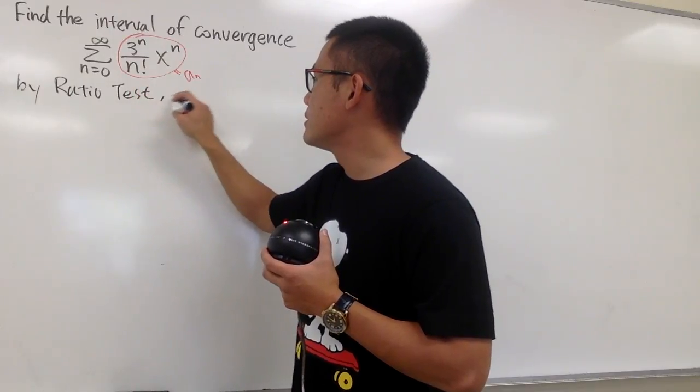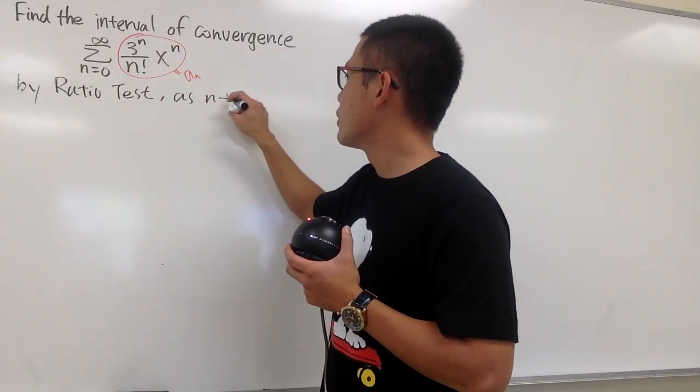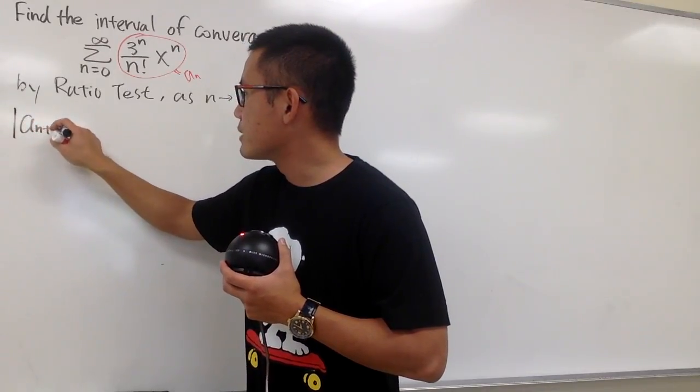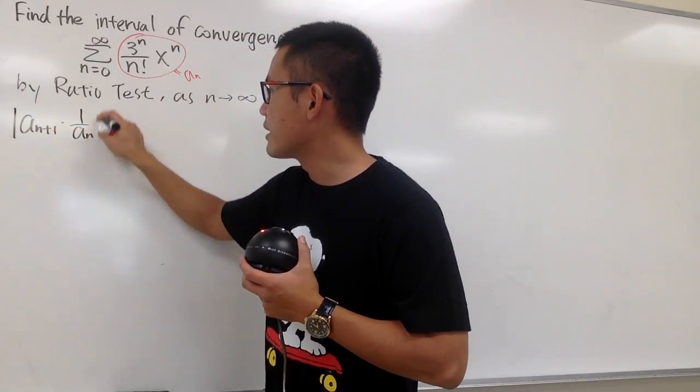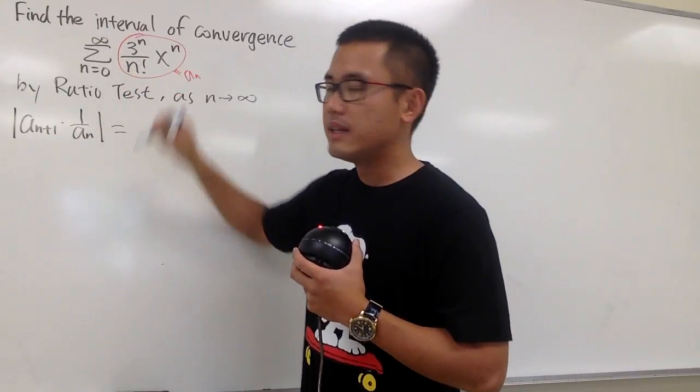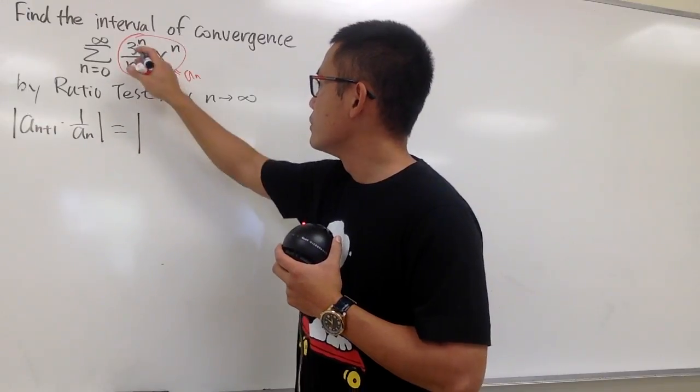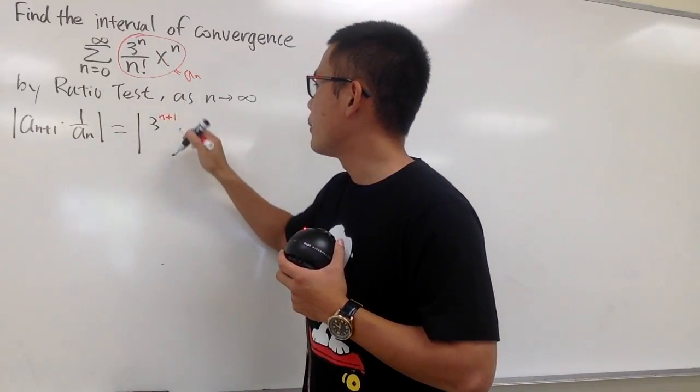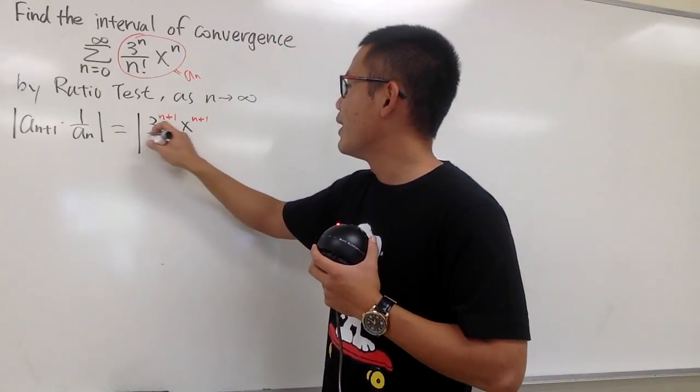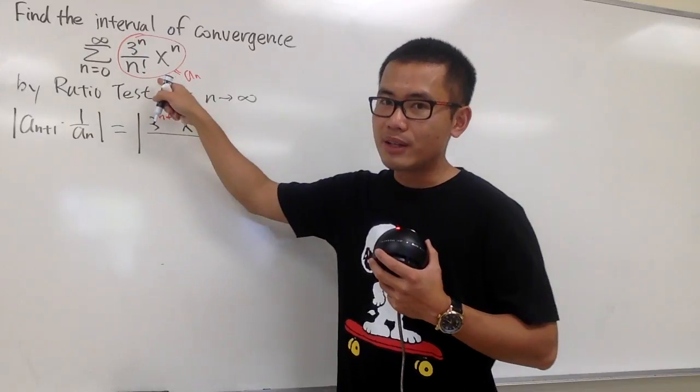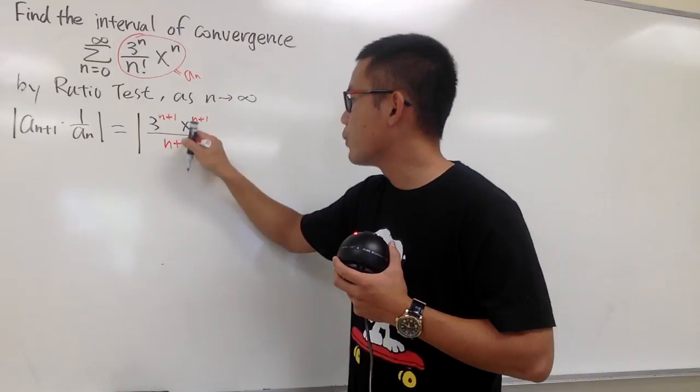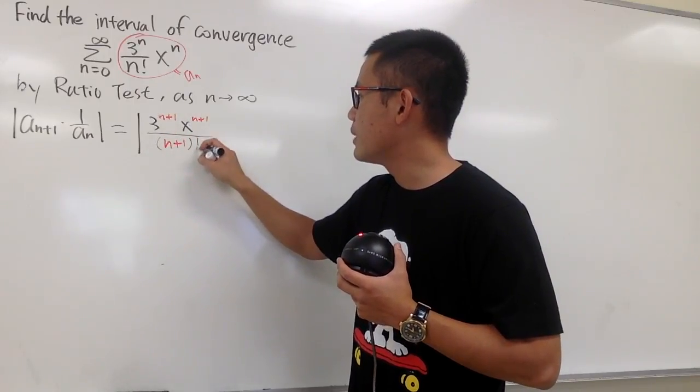we know that the first step is to take the limit as n goes to infinity, and we have to look at the absolute value of a_(n+1) times the reciprocal of a_n. And this is going to give us, plugging n+1 into all these n's, so we will have 3^(n+1), and this is also on the top, so put down x^(n+1), over, we have n factorial originally. Plugging n+1 into this n, we will have (n+1) in a parenthesis, and then we have the factorial.